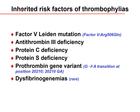Inherited risk factors for thrombophilia include: Factor V Leiden mutation (arginine to glutamine change at position 506); antithrombin III deficiency; protein C deficiency; protein S deficiency; prothrombin gene variant (G20210A — glutamine to alanine transition at position 20,210); and dysfibrinogenemias, all of which can cause thrombophilia.